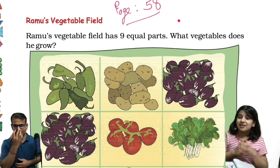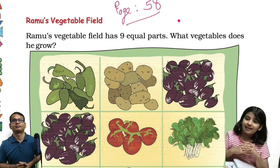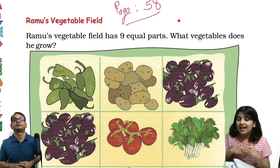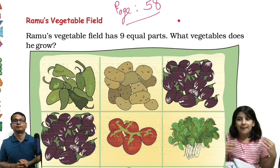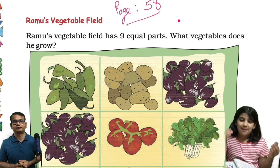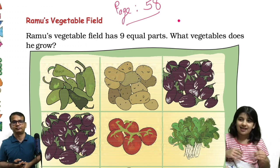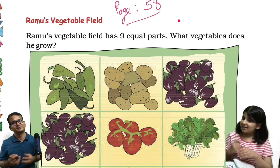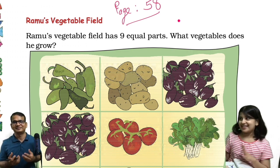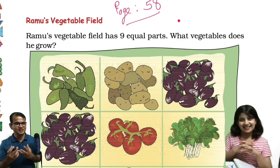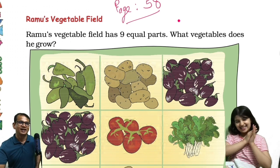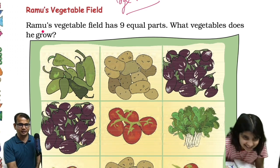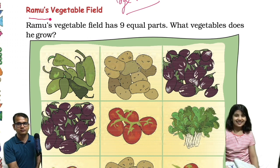Welcome back to this channel. Today we will be covering NCRT book Chapter 4, Parts and Holes, page number 15. Without wasting further time, let's start.